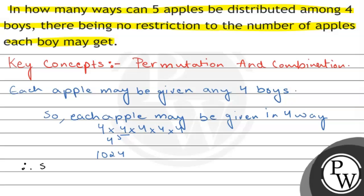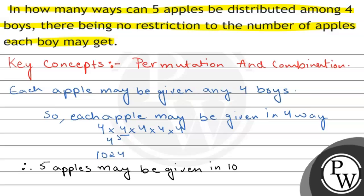Therefore, five apples may be given in 1024 ways. Okay, hope you all understand well. Best of luck, thank you.